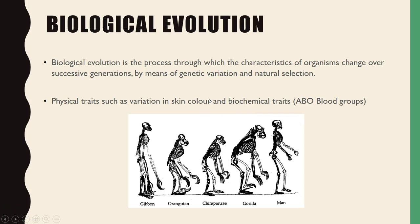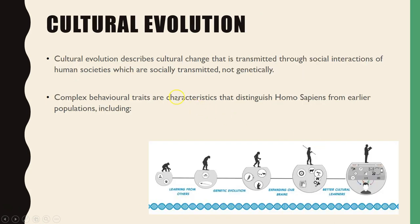So let's define some key terms. Biological evolution is the process in which characteristics of an organism change over time, over successive generations, usually by genetic variation and natural selection. For example, physical traits like skin colour and biochemical traits like blood types change through biological evolution. You can see here that organisms have been biologically evolving because they are being selected for, as one phenotype is more favourable than another for particular environments.